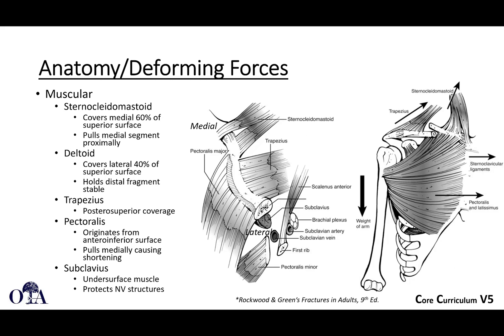There are quite a few deforming forces. The muscular anatomy, shown here in two different views from Rockwood and Green: the sternocleidomastoid covers the medial 60% of the superior surface and can pull the medial segment proximally, which is frequently what you see. The deltoid covers the lateral 40% of the superior surface and holds the distal fragment stable. The trapezius is posterior-superior, the pectoralis originates from the anterior-inferior surface, and the subclavius is the muscle underneath that protects the neurovascular structures.